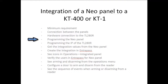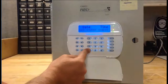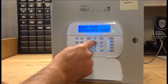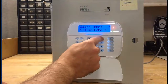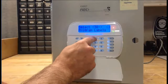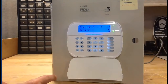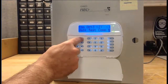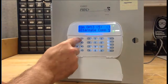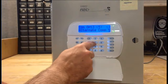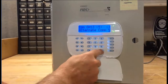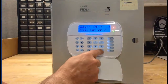Now let's take a look at programming the NeoPanel. First, we're going to press star 8 and then our installer code 5555, and then go to subsection 382. We will select option 5, alternate communications. If we press 5, you can toggle between yes and no — we'll want to make sure that yes is selected.